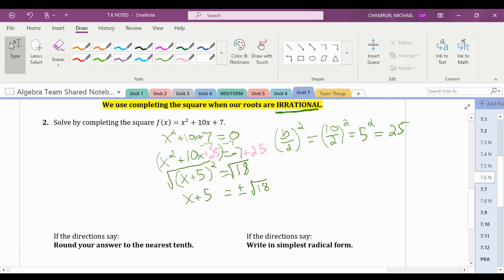There's no two numbers that times itself equals 18. So let's keep on continuing. I'm going to subtract 5 from each side. And now I have x equals negative 5 plus or minus the square root of 18.